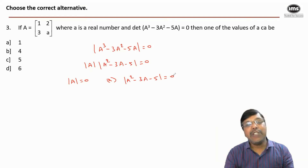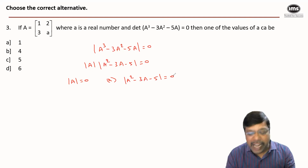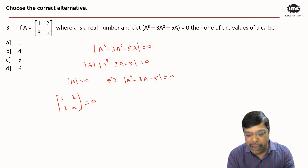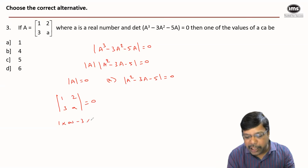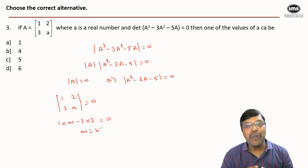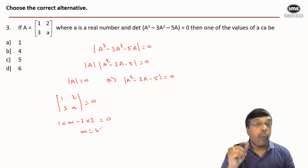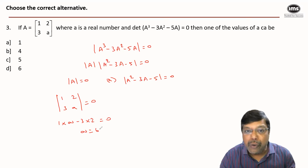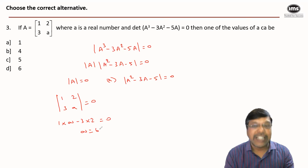Let's verify the first condition: when will det(A) = 0? Computing the determinant of the given 2×2 matrix and setting it to zero: 1·a - 3·2 = 0, which means a = 6. So for a = 6 the given equation is true, and we are fortunate to have 6 in the answer options. Hence option D.